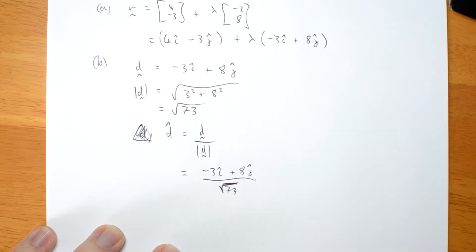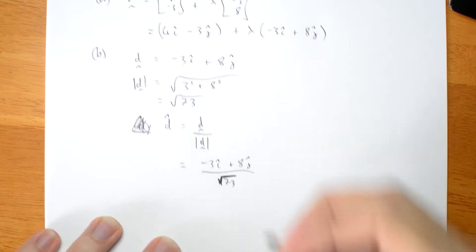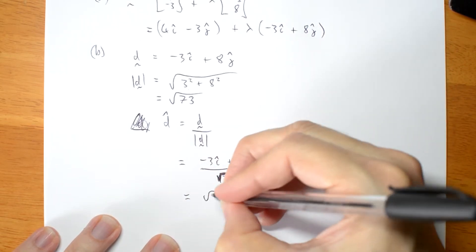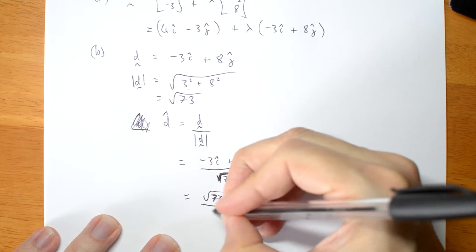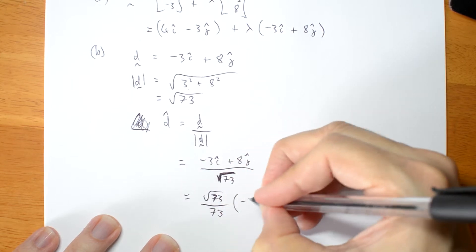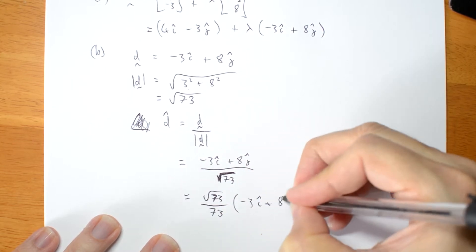If you would like to rationalize the denominator, it will be root 73 over 73 times minus 3i plus 8j.